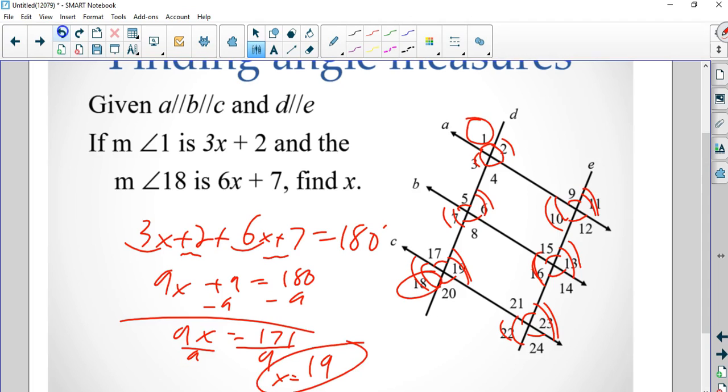Once again, what does that mean? I can take this 19 and plop it in right there. 19 times 3 is 57 degrees, which makes sense because 20 times 3 is 60. If I plug 19 right here, I'm going to use easy math. 6 times 20 is 120, and go back to 114 plus 7 is 121.